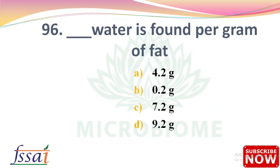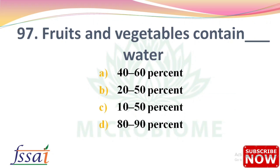Next: Dash water is found per gram of fat — options: 4.2g, 0.2g, 7.2g, 9.2g. The right answer is option B, 0.2 gram. Next: Fruits and vegetables contain dash percent water — options: 40–60%, 20–50%, 10–50%, 80–90%. The right answer is option D, 80 to 90 percent.